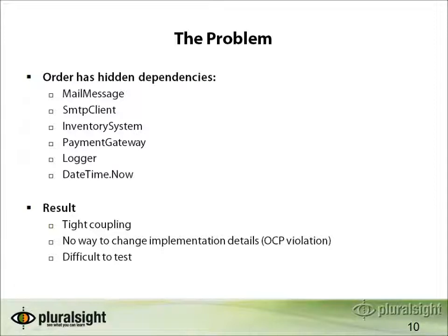The problem with our Order class is that it has a lot of hidden dependencies: MailMessage, SmtpClient, InventorySystem, PaymentGateway, Logger, and DateTime.Now. The result is a class with very tight coupling — there's no easy way to change any of these implementation details. This is an Open-Closed Principle violation: the only way we can change how Order works is to go in and change its code. And it all ends up being very difficult to test.